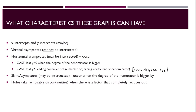Moving on, let's look at what characteristics we're searching for on these graphs. We'll be looking for x and y intercepts, which don't always happen. We'll also be looking for vertical asymptotes, which cannot be intersected, and horizontal asymptotes, which may be intersected. These occur on a case-by-case basis: when the degree of the denominator is bigger, we have a horizontal asymptote at y equals 0; when the degrees tie, there's a horizontal asymptote at y equals the leading coefficient of the numerator over the leading coefficient of the denominator. Slant asymptotes, which we won't cover in this video, occur when the degree of the numerator is bigger by 1. Lastly, we'll be looking at holes, also called removable discontinuities, which happen when there is a factor that completely reduces out.